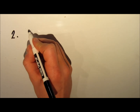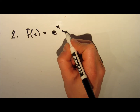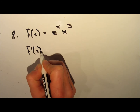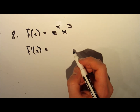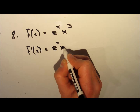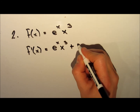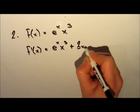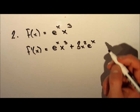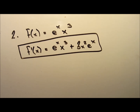This second example involves the product rule. The function is f(x) = eˣ · x³. To take the derivative, we take the derivative of the first part, eˣ, which is just itself, and multiply it by x³. Then we add the derivative of the second part, x³, which is 3x², multiplied by the first part, eˣ. The product rule still holds as you would expect.